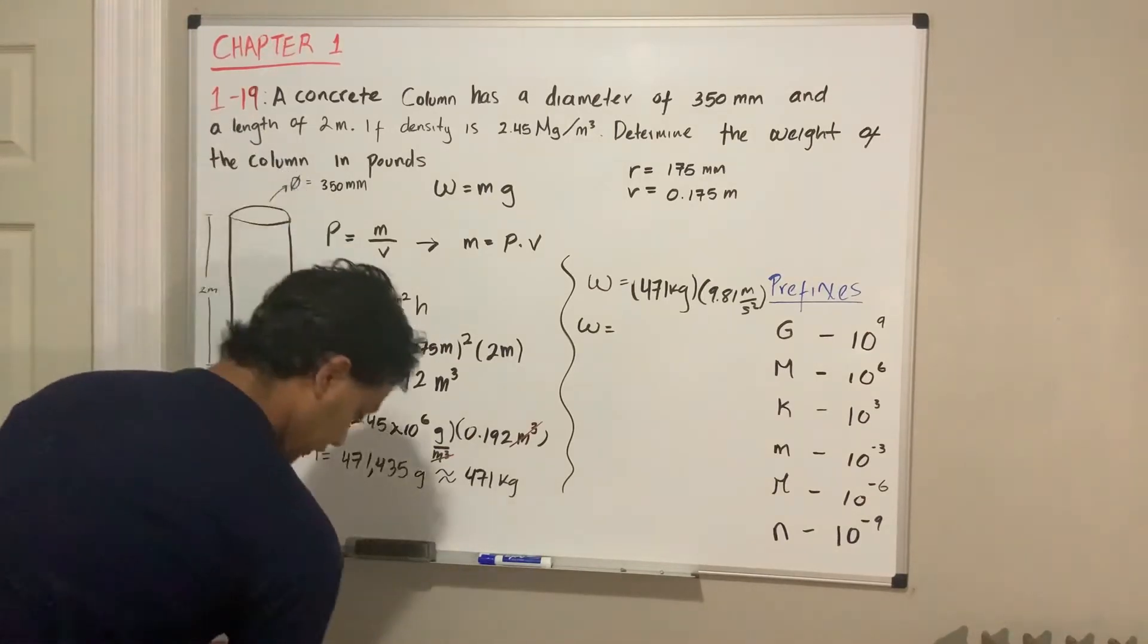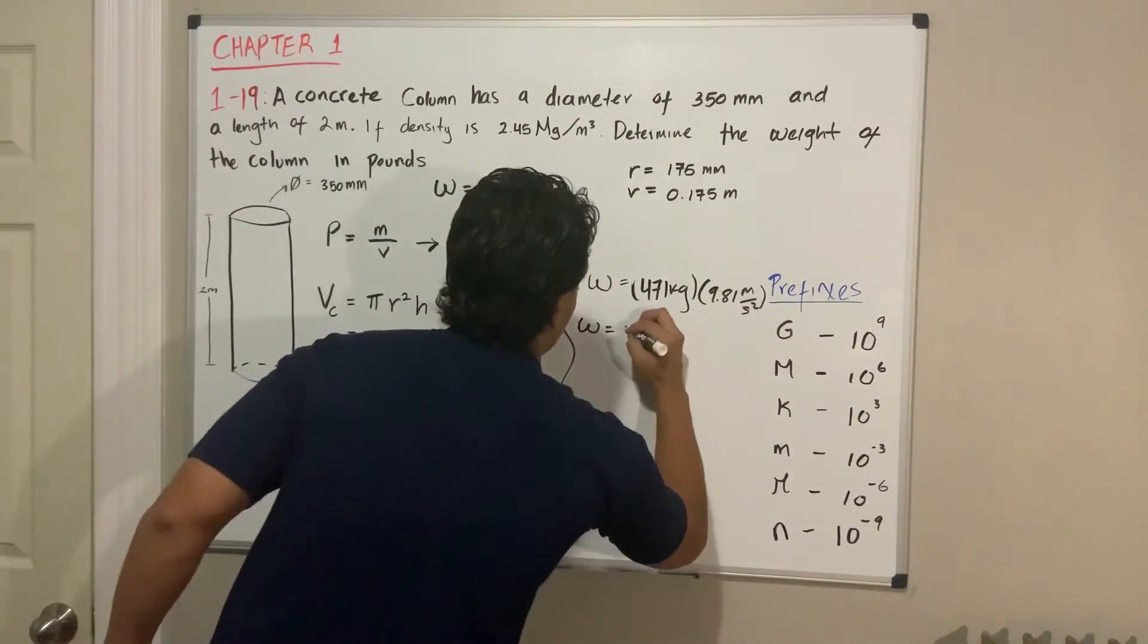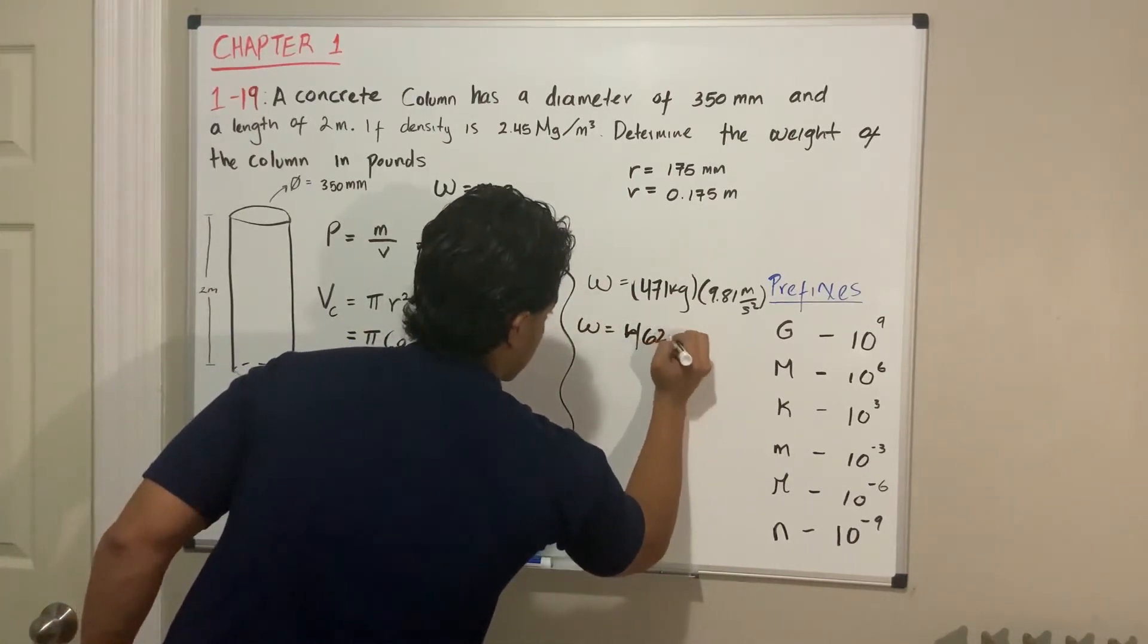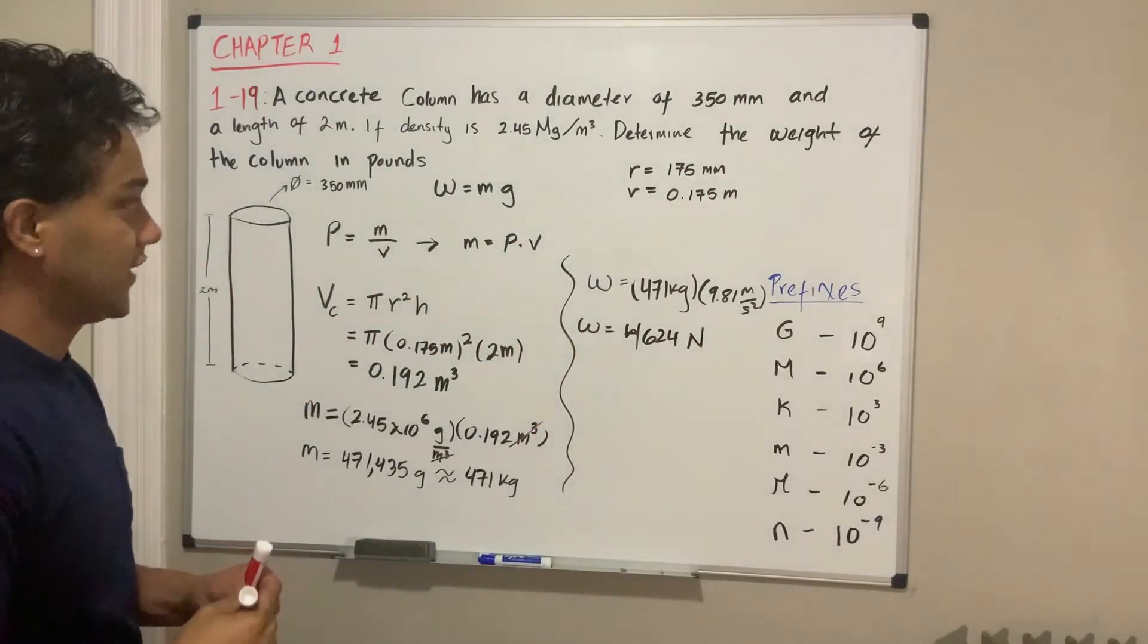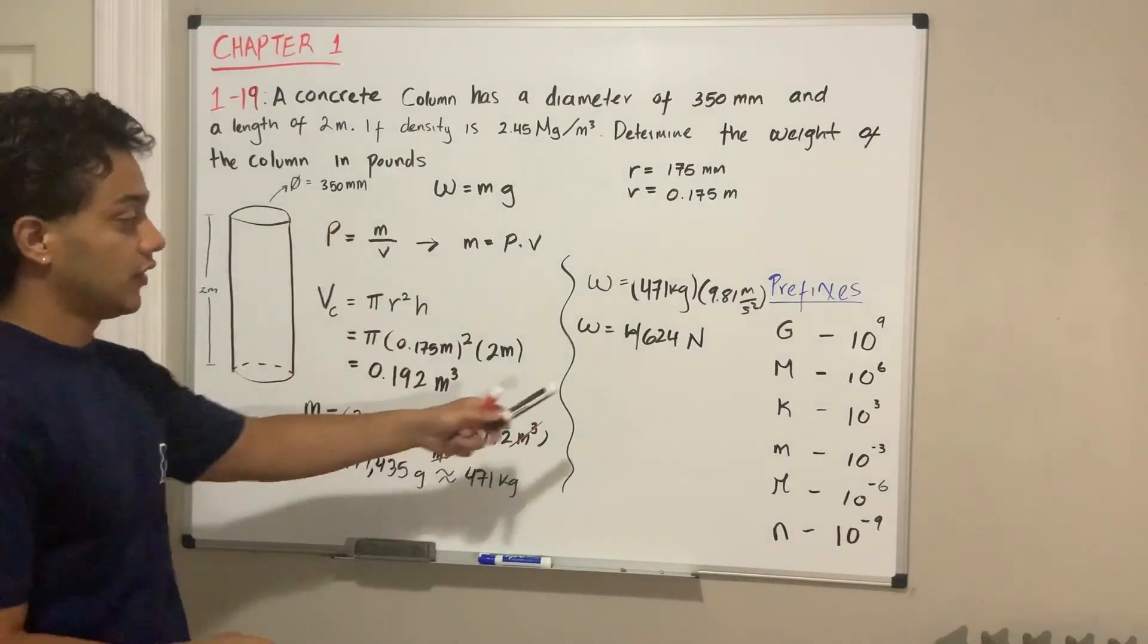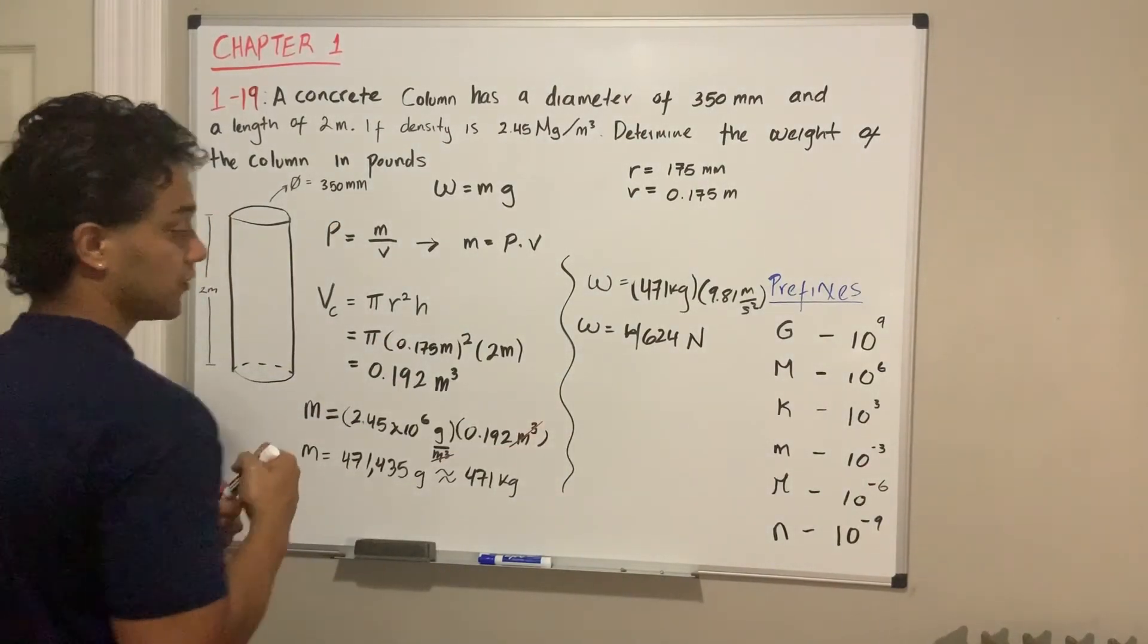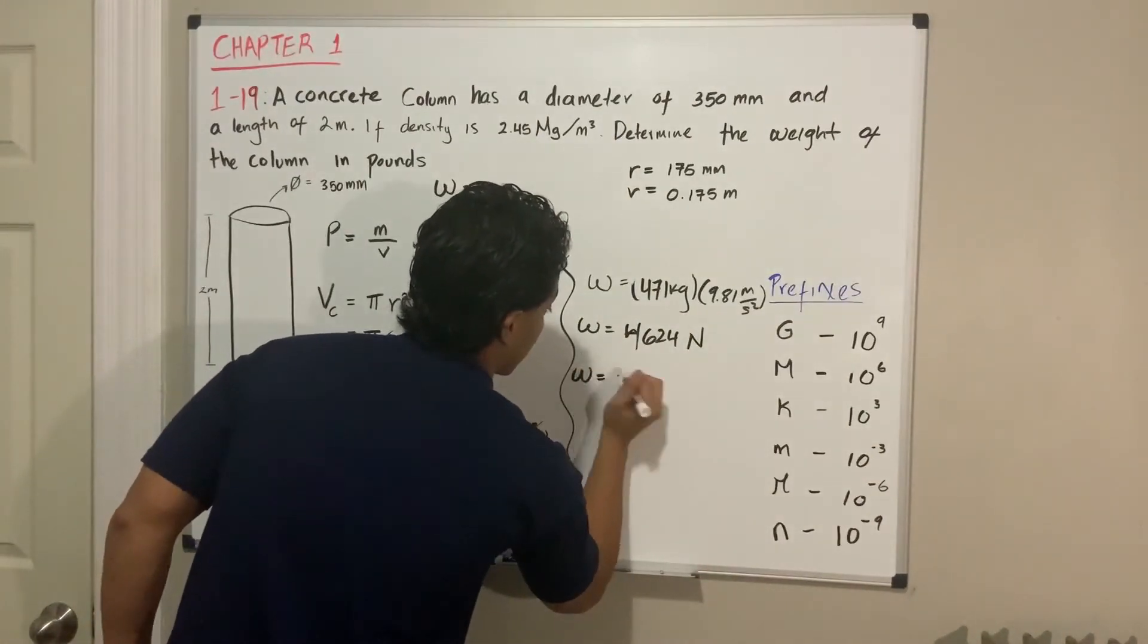The weight is 4624 newtons. But wait, they want to find the weight in pounds, they don't want it in newtons. So for this, we're gonna use our conversion factors from our previous video.